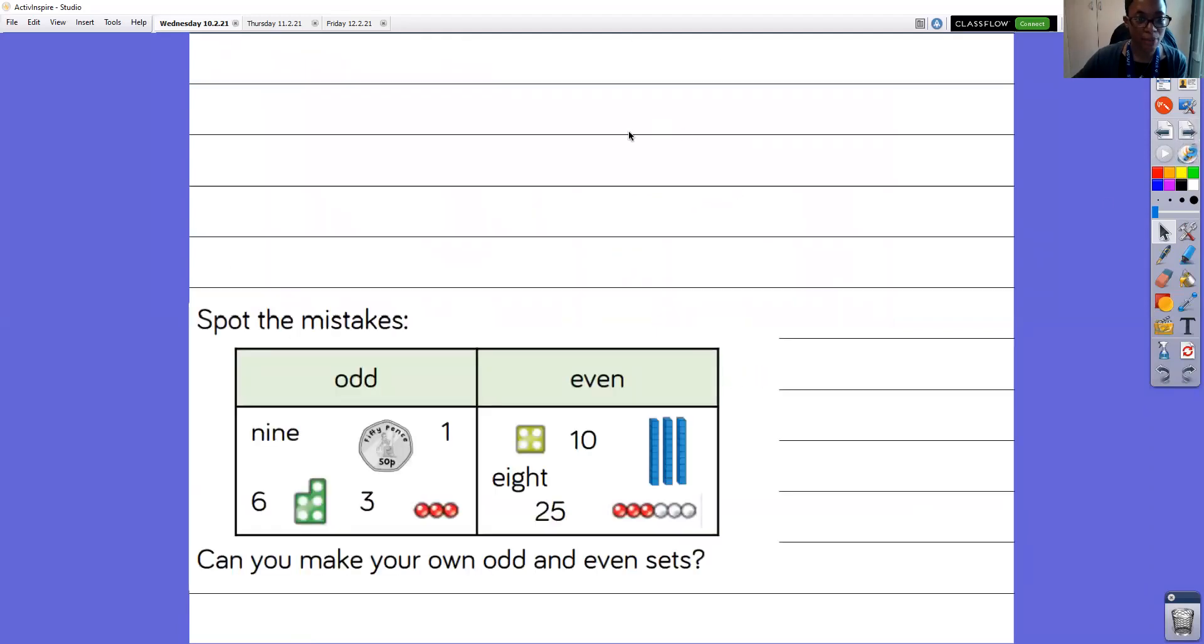Feel free to again lay it out in your book if you wish. Odd at the top and even. Draw them in. Maybe just circle those mistakes and add in any extra odd or even to the set just to make it your own.